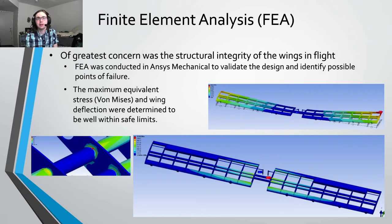We conducted finite element analysis using ANSYS mechanical to ensure our wing design was structurally sound. The two lower images show the von Mises equivalent stress in flight, as well as a close-up of the maximum stress, while the smaller image above shows an exaggerated view of the wing deflection.